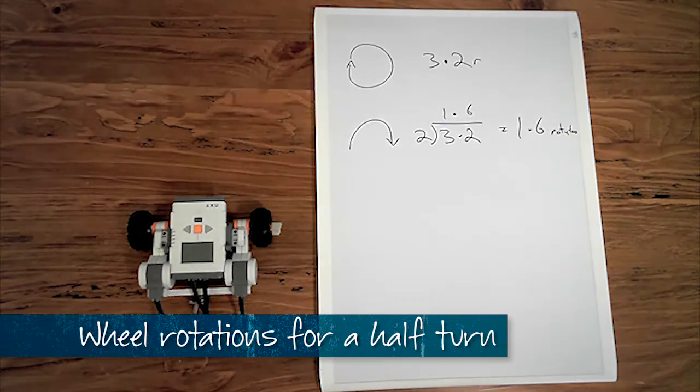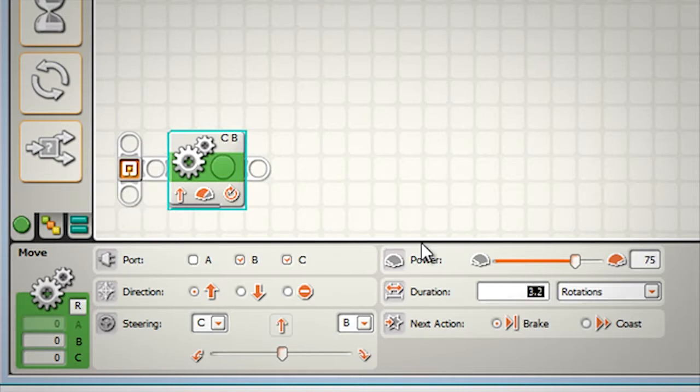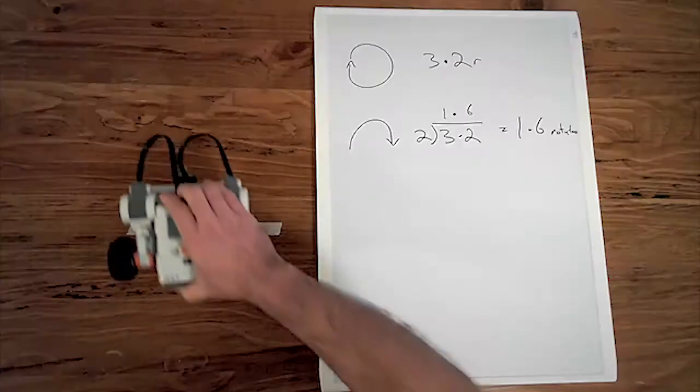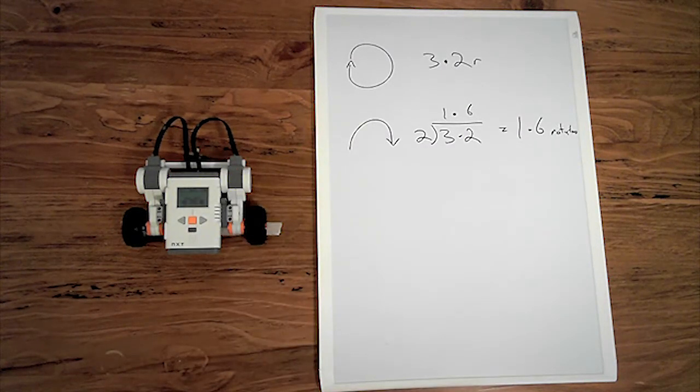Let's download that to the robot and see how we go. Here we are with our robot turning the wheels 1.6 rotations. And as we can see we get a perfect half turn.